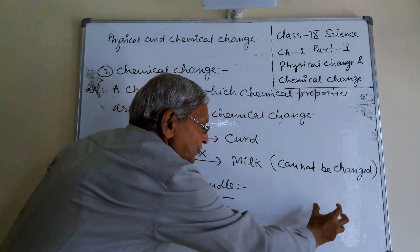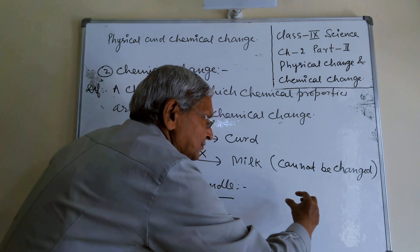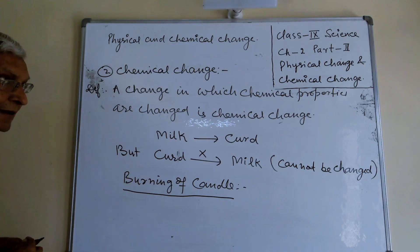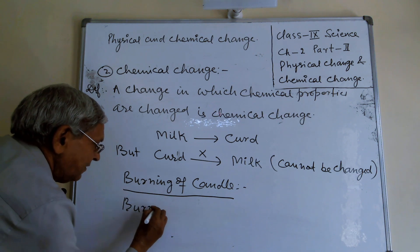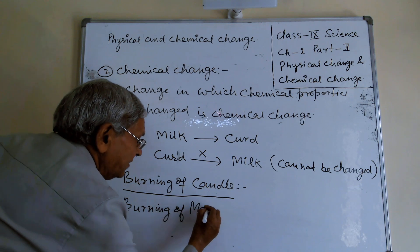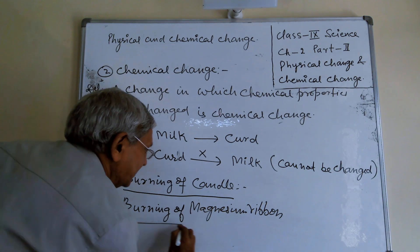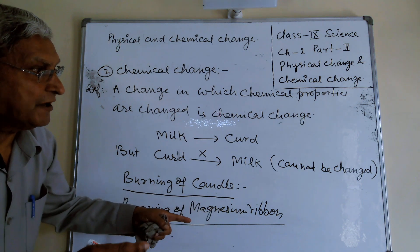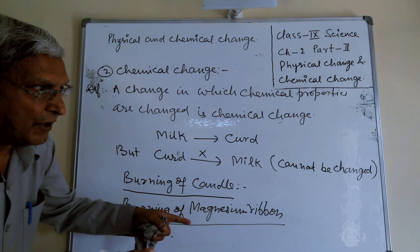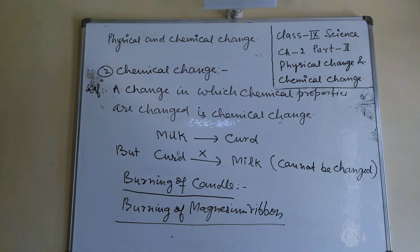Because all the constituents after burning, if you want to make these constituents again into a candle, it is not possible. For example, burning of magnesium ribbon: if you burn the magnesium ribbon in the presence of oxygen, you will get magnesium oxide. But from magnesium oxide, you cannot get magnesium ribbon again. So this is not possible. These are the examples of chemical change.